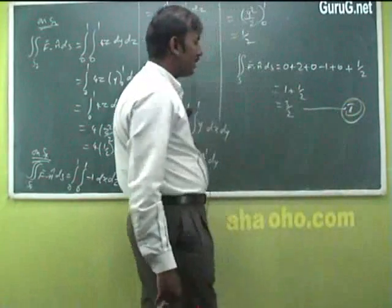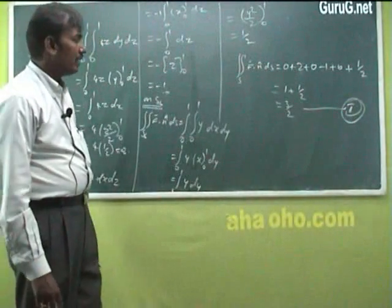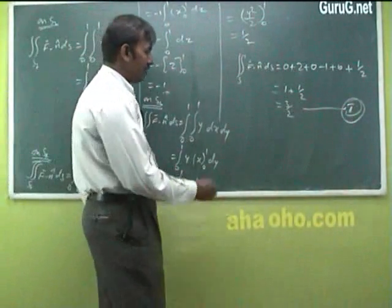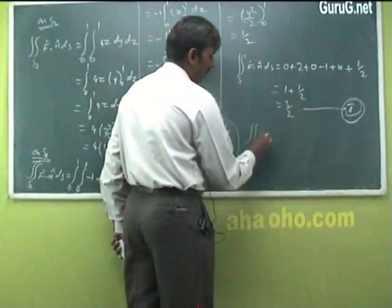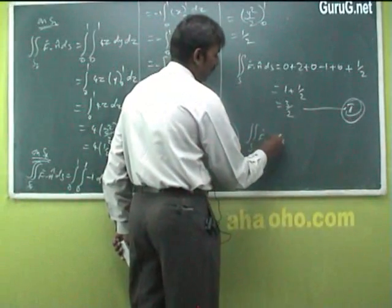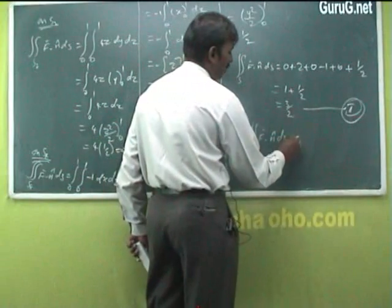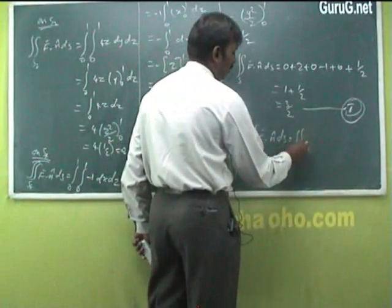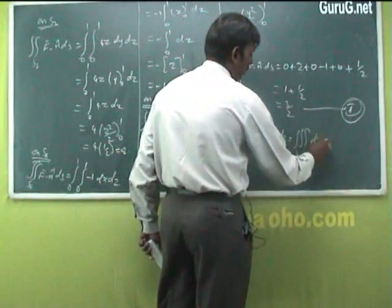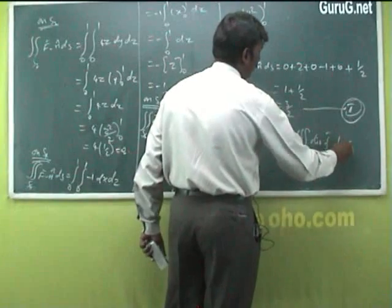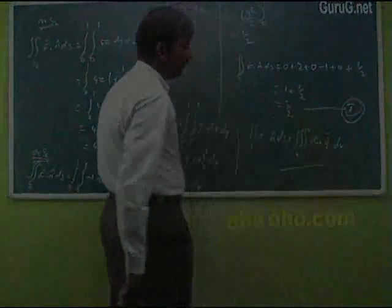From equation (1), the triple integral over V of divergence of F equals 3/2, and the surface integral also equals 3/2. Both sides match, so the Gauss Divergence Theorem is verified for this problem as well.